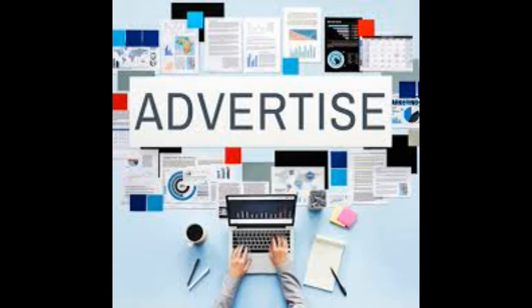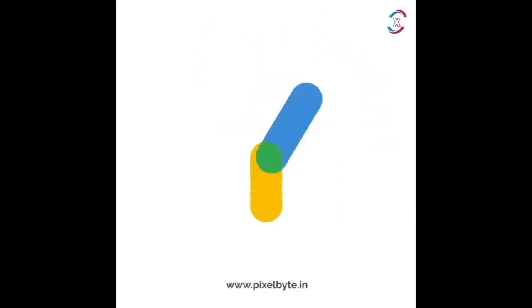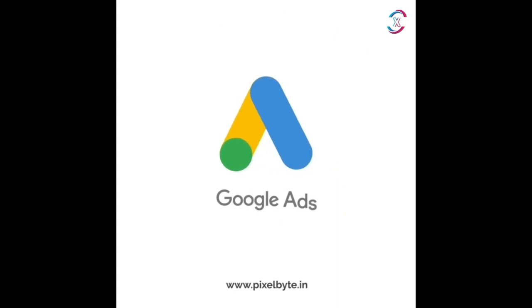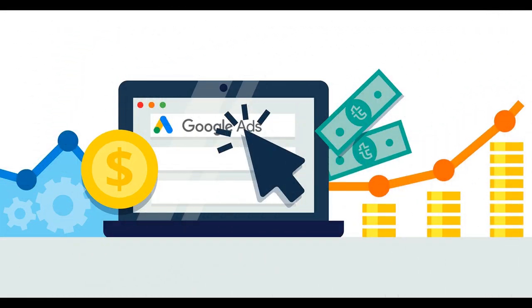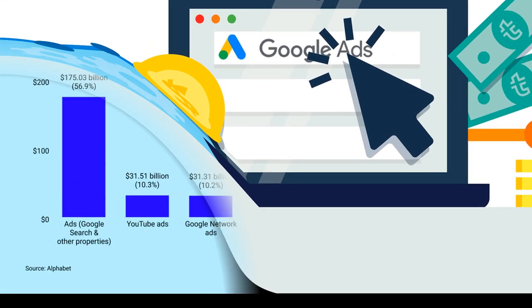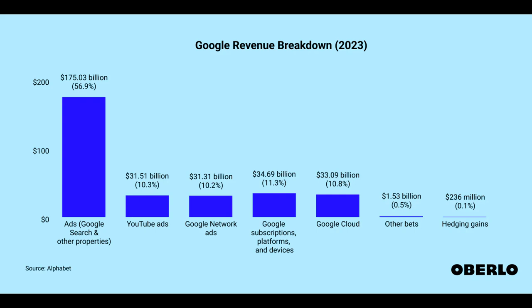Now you might wonder what profit Google AdSense gets. Advertisers pay through Google AdSense for the creators. AdSense takes 40% of the money from the advertisers and gives 60% to the creators like us. This is how Google makes a lot of money all the time.